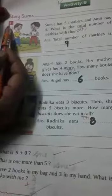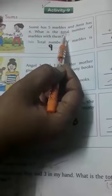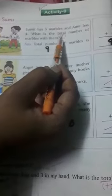Question number 1. Sumit has 5 marbles and Amit has 4. What is the total number of marbles with them? Sumit ke paas 5 marbles hain aur Amit ke paas 4. What is the total? Total means plus. Underline total and write plus next to it.